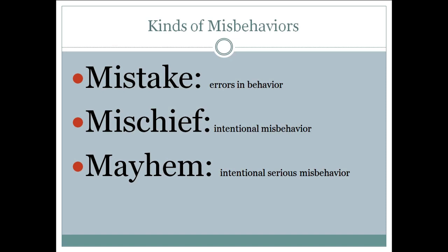An example is a school I worked with where they said every time they saw a child running in the hallway, they would ask the child to go back to where they started and walk. That was an agreement they all made. My challenge with that is that I think we need to look at each situation in a unique way, because there are three different kinds of misbehavior.